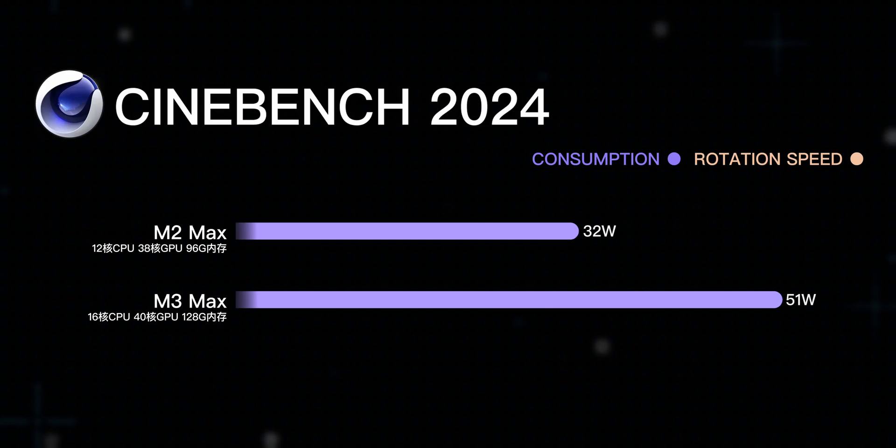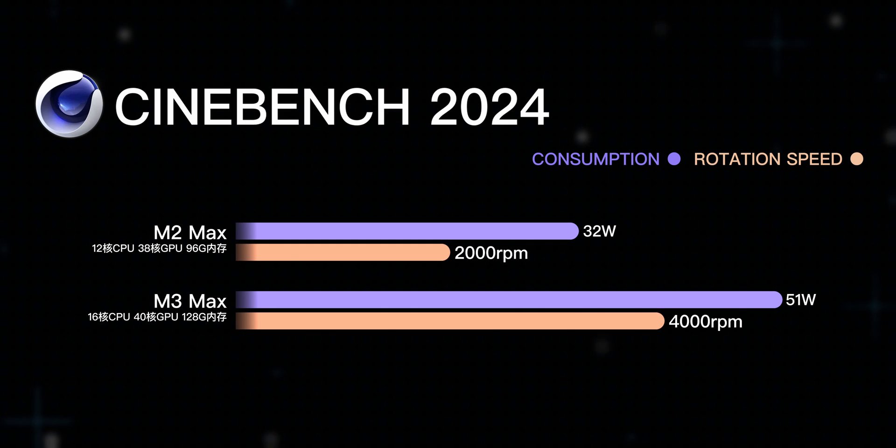Moreover, in the Cinebench 2024 rendering test, M3 Max power consumption reaches up to 51W, while M2 Max is only 32W. The corresponding fan speeds are 2,000 RPM vs 4,000 RPM — so the fan actually spins up. Does this mean Apple was holding back M2 series performance before? Because we are a professional audio channel, next we'll test audio software specifically.